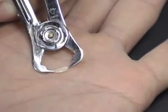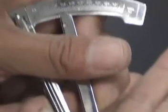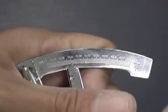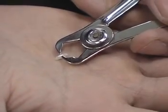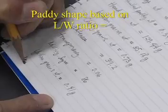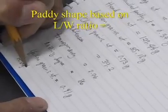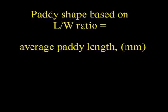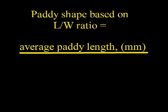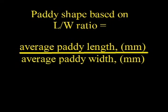Grain shape and dimensions are varietal properties and can therefore be used to identify a variety. For determining the rice grain shape, follow the procedure of determining grain shape of paddy: the average paddy length in millimeters divided by the average paddy width in millimeters. Based on the length to width ratio, the shape of the milled rice will be determined.